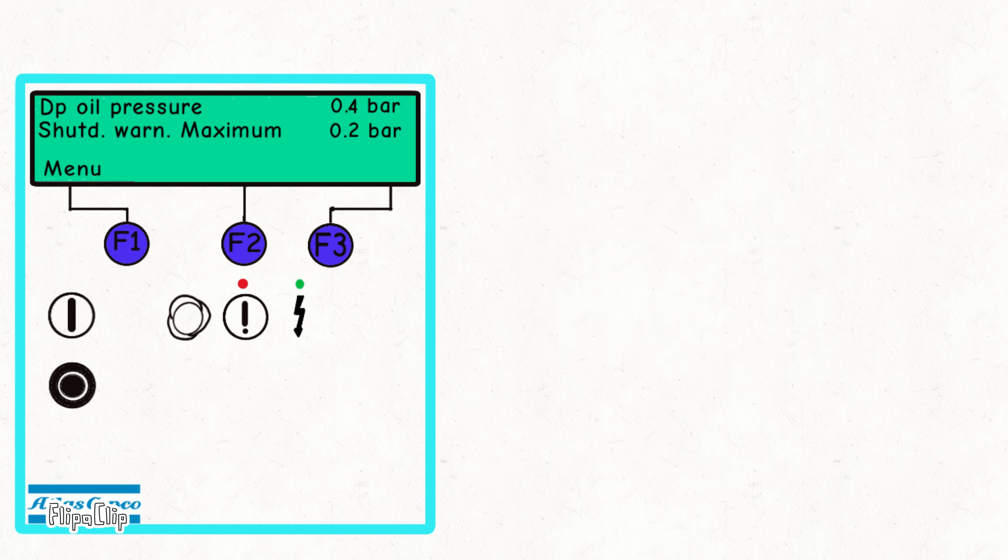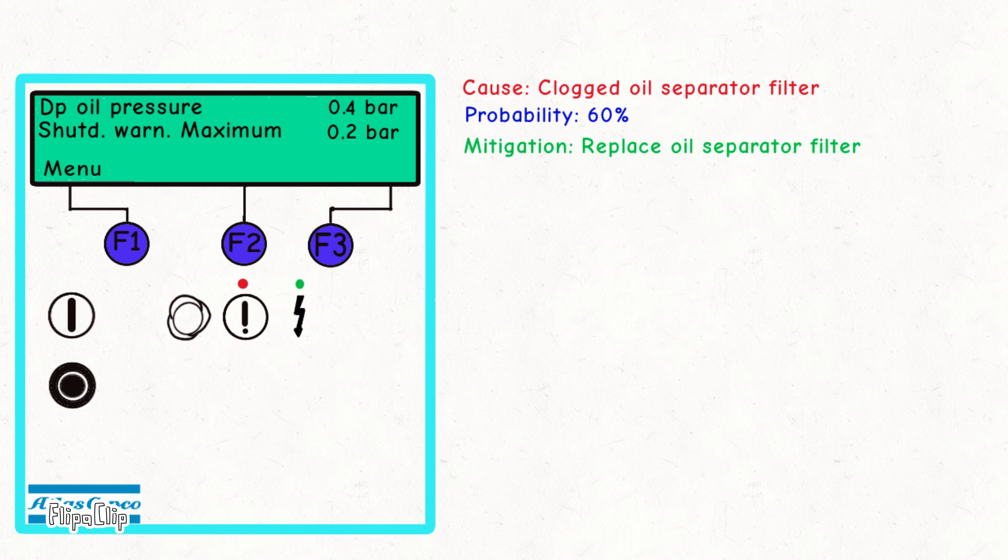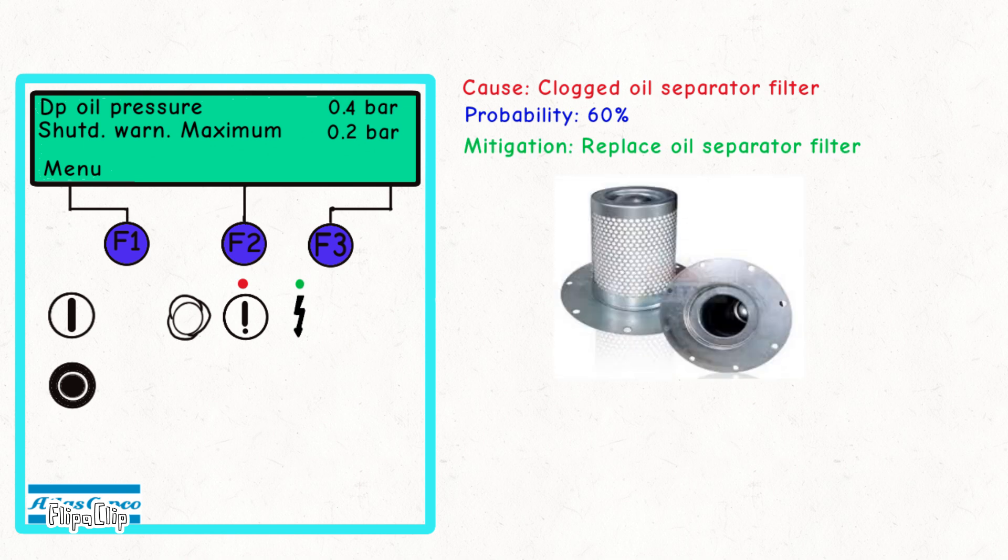A high pressure drop in the separator is likely due to a clogged oil separator. To address this, you need to replace the oil separator filter after 4,000 hours of operation.